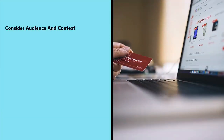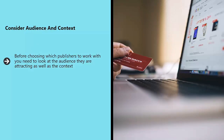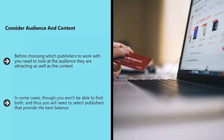Consider audience and context. Before choosing which publishers to work with, you need to look at the audience they are attracting as well as the context. The ideal partner will be a site that writes about topics related to yours and targets the precise same demographic. In some cases you won't be able to find both, so you will need to select publishers that provide the best balance. Don't be tempted to ignore context, because studies show that the same person is far more likely to click on an ad for golf clubs when they are on a golfing website compared with a news site. Someone who wants a wedding dress is only going to want that during a particular time in their life, and this really demonstrates the importance of context.